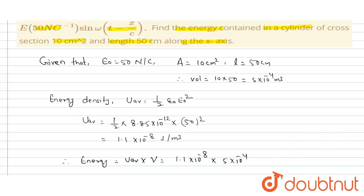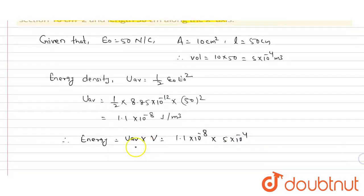We get the energy as 5.5 × 10⁻¹² joules. So our energy is 5.5 × 10⁻¹² joules. This is our final answer.